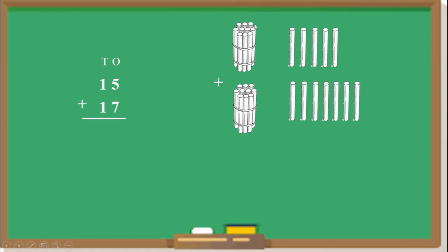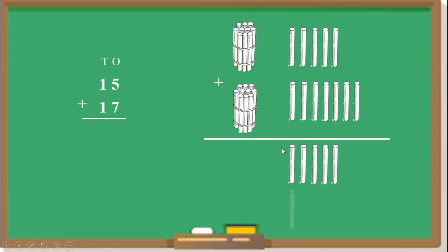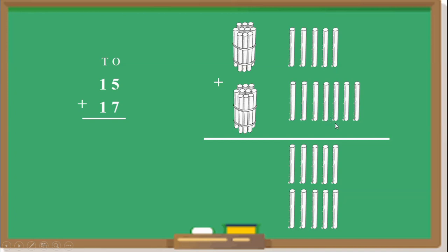Now we have to add. We start by adding the right-hand side — the loose sticks. We count: 5, 6, 7, 8, 9, 10, 11, 12. So here we got 12 sticks.